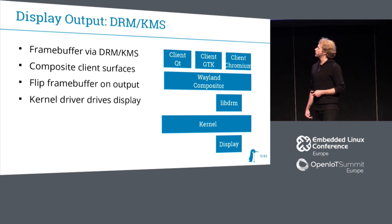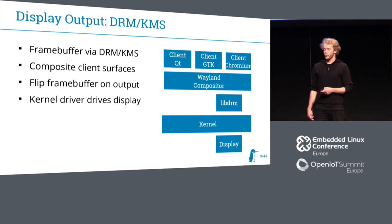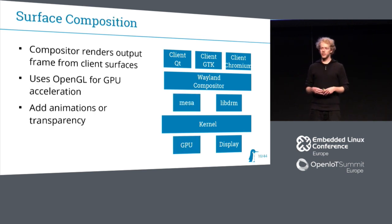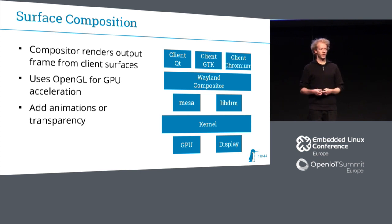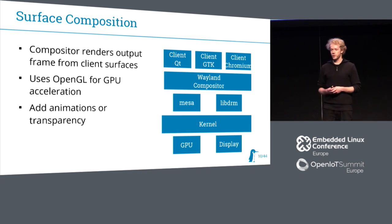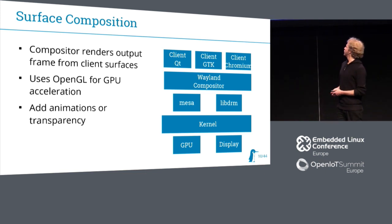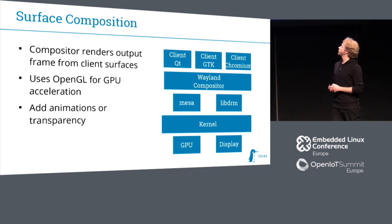Here is where DRM and especially KMS come into play. Wayland uses OpenGL for compositing the different applications together. For that, it uses Mesa and some GPU driver and actually GPU hardware below that to make it really fast. It can also add animations and transparency, so your windows can pop in or burn if you close them. That's more or less the graphics stack.